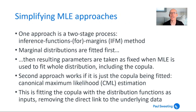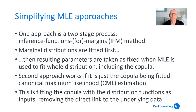The first approach is a two-stage process called the inference functions for margins, or IFM method. For this, we first fit the marginal distributions. We then take the parameters from that marginal distribution fit and treat them as fixed. So when we're doing maximum likelihood estimation for the whole multivariate distribution, the marginal parts are taken as fixed and the only moving parts are the bits which actually fit the copula.